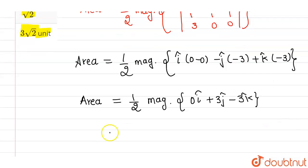Now I know that the magnitude of this particular vector will be given by half into magnitude is nothing but root over 0 square plus 3 square plus minus 3 square.